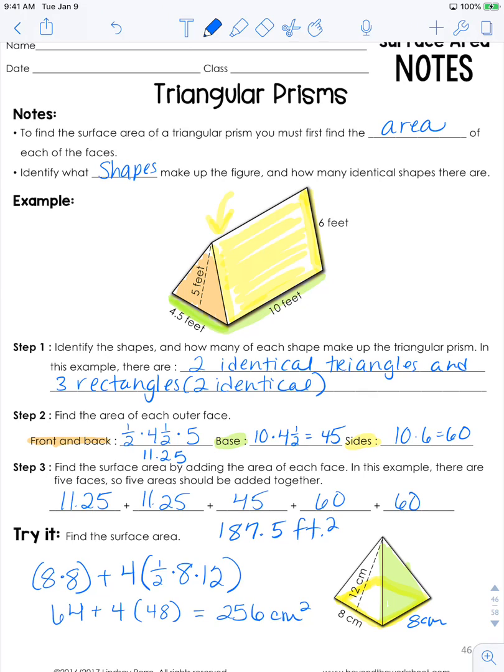So the key with surface area is to identify not only the number of sides but also which ones are identical and then find the area of each one independently and then add them up. The sum of each individual area is your surface area.